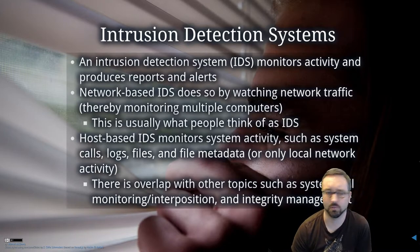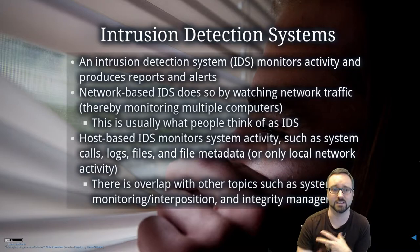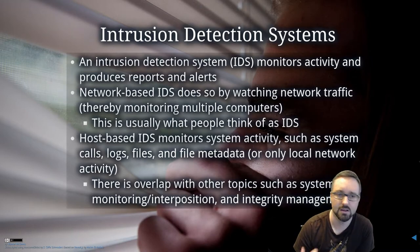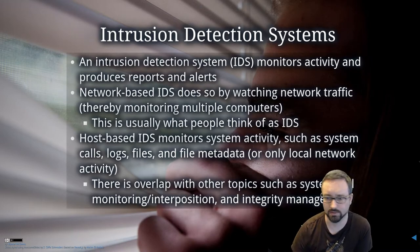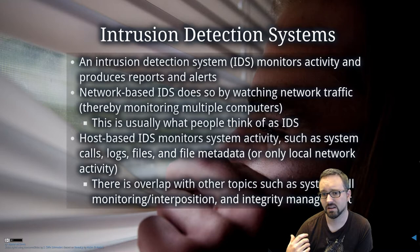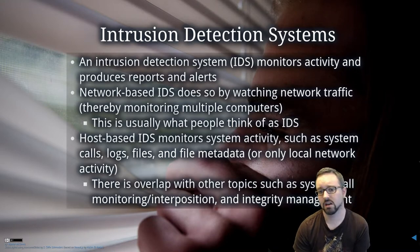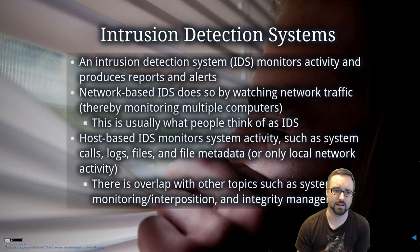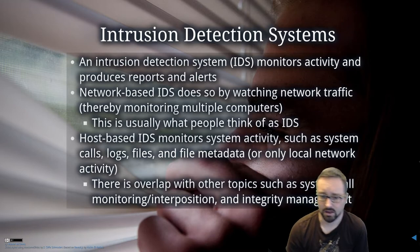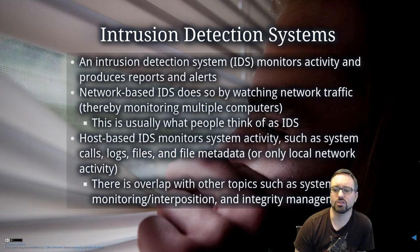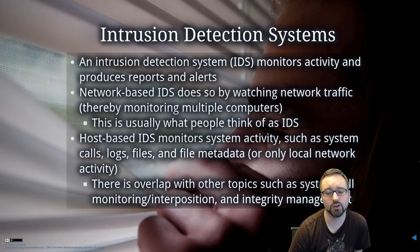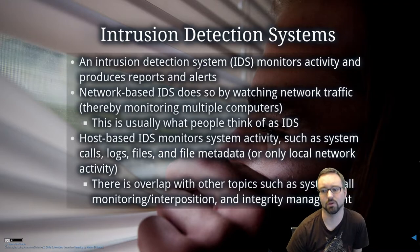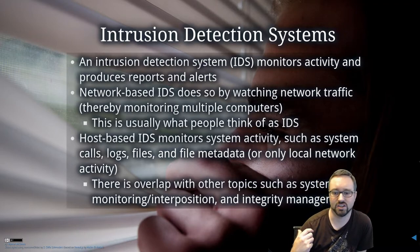That's essentially what an IDS is. An intrusion detection system monitors activity on a network and produces reports and alerts — it's looking for specific things and when it sees them it generates an alert or log file entry. A network-based IDS does this by watching network traffic and monitoring multiple computers on a network segment.